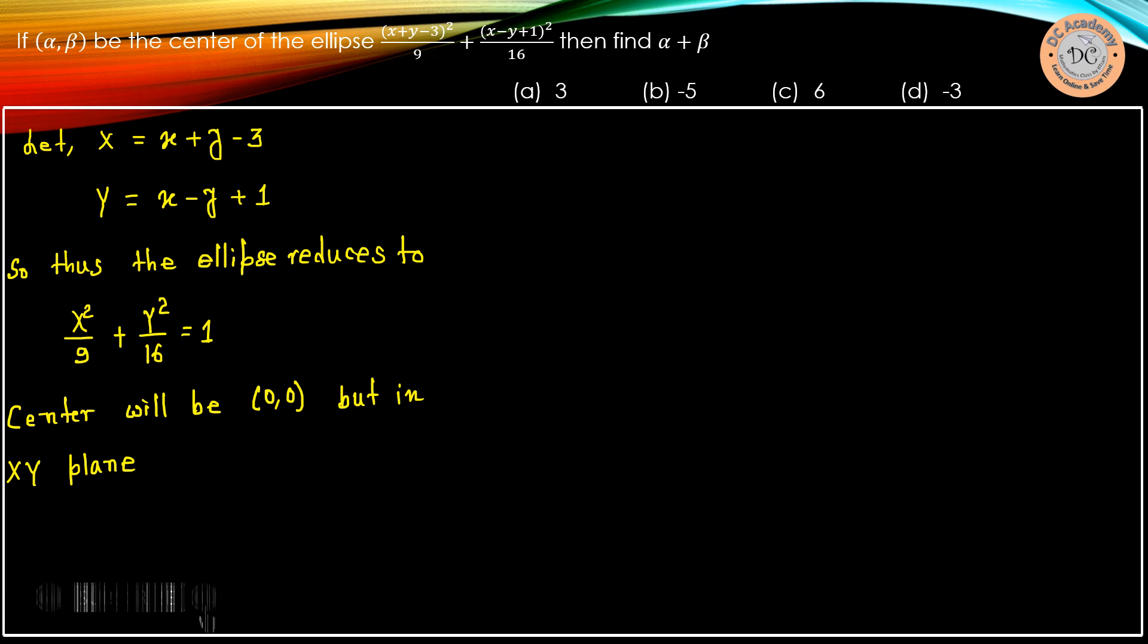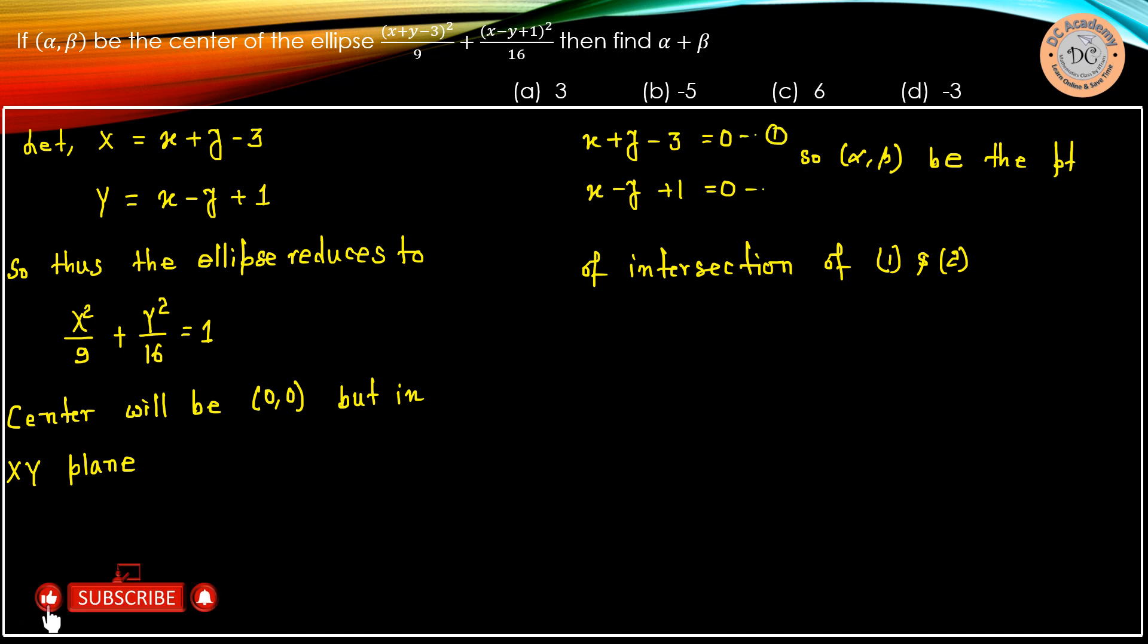That's why we consider caps X equals 0, which means x plus y minus 3 equals 0, and caps Y equals 0, which is x minus y plus 1 equals 0. Given that alpha beta is the center in x, y plane, alpha beta will be the point of intersection of these two lines, which we rename as equation 1 and equation 2.